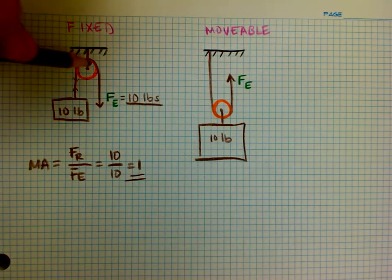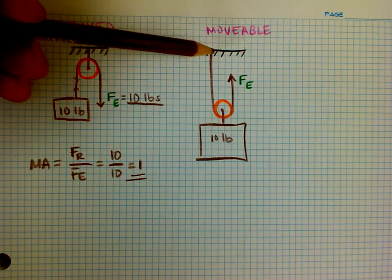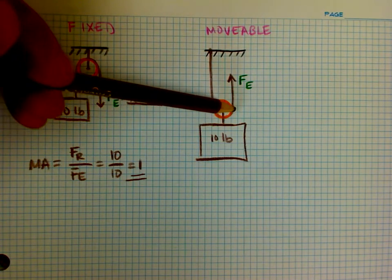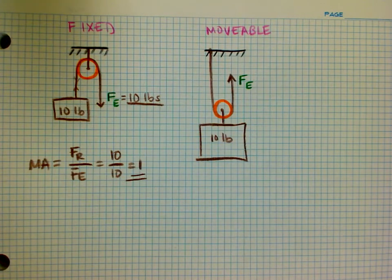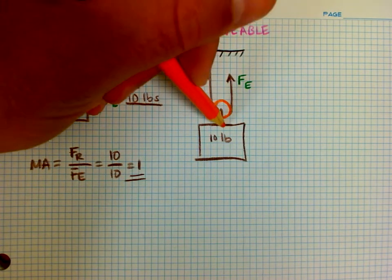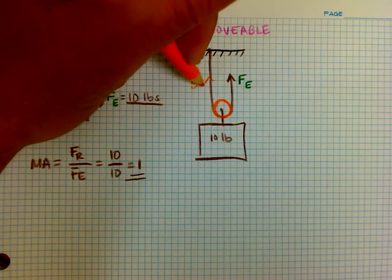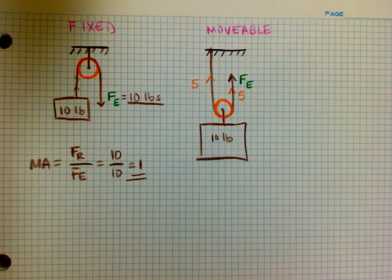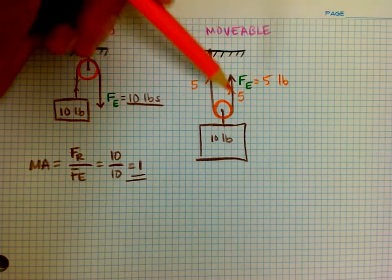The only thing the fixed pulley does is change direction — it allows me to pull down instead of up. With a movable pulley, the difference is this: the string is mounted instead of the pulley, the rope hangs down, goes underneath the pulley, and I pull upward on it. With a 10-pound force, 10 pounds downward on the pulley means 10 pounds upward for equilibrium, so five pounds is on this rope and five pounds is on this rope.